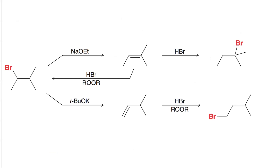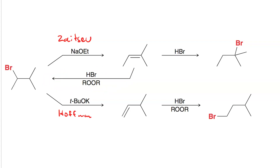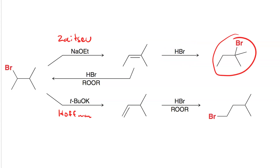Here's a summary. Zaitsev elimination of our original alkyl bromide gives us the more substituted alkene. If we did Hoffman, on the other hand, we'd get the less substituted alkene. If we do Markovnikov hydrobromination, this gives us our new alkyl bromide. So what we've done is moved the bromine from a less substituted position to a more substituted position.